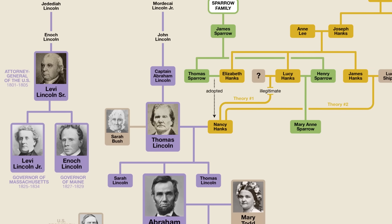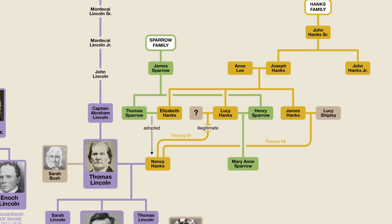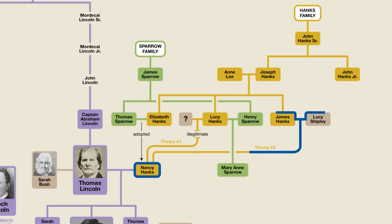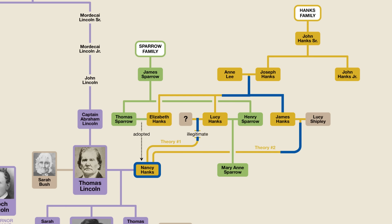His mother's side is a bit more interesting because up until recently there's been some mystery over his mother's parentage. His mother's name was Nancy Hanks, but she was also known as Nancy Sparrow because as a child she was adopted by Thomas Sparrow and Elizabeth Hanks. As to who her biological parents were, there used to be two competing theories. One was that she was the daughter of Elizabeth's sister Lucy Hanks, who later married Thomas' brother Henry Sparrow, but who perhaps had given birth to Nancy illegitimately before she got married. The other theory is that Nancy was the legitimate daughter of Elizabeth and Lucy's brother James Hanks and his wife Lucy Shipley. So, either way her mother's name was Lucy and either way she was the biological granddaughter of Anne Lee and Joseph Hanks.